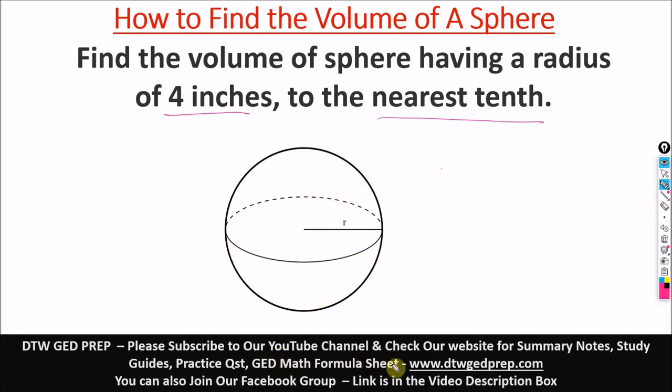The volume of a sphere, using our GED math formula sheet (you can also get it on our website, I'll leave the link in the video description box), the formula is 4 over 3 π r cubed, where r is the radius from here to here. We have 4 inches as our radius.